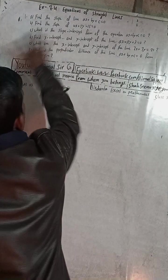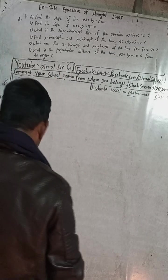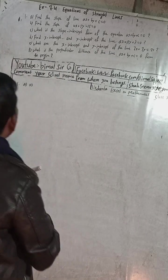This is the last problem in exercise 7.4 — equations of straight lines — from Vedanta Excel in Optional Mathematics. All other solutions are already uploaded; check the playlist and you will get the solutions.